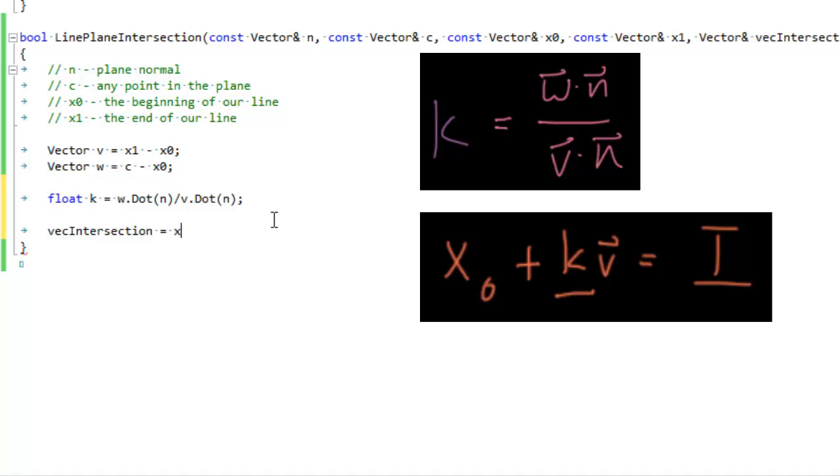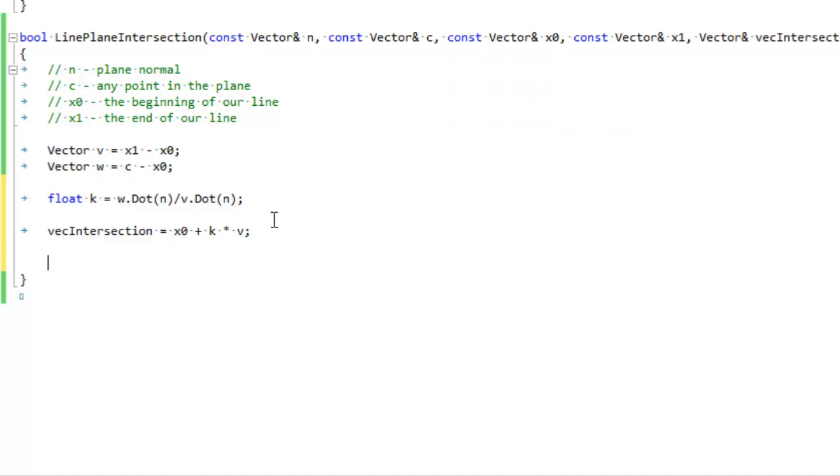The intersection is just x naught plus k times v. Those are our two equations that we worked out before. And there they are. Now, if you remember from the line box intersection video, we need to figure out this fraction so we can tell how far through our trace we actually hit the plane.